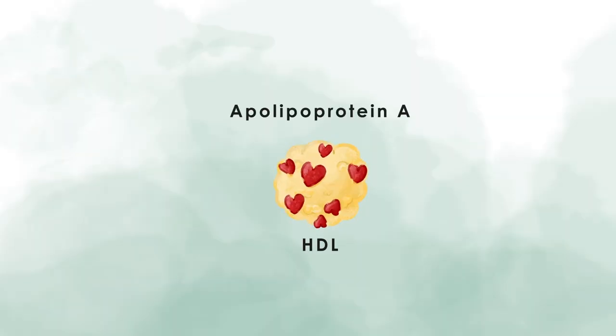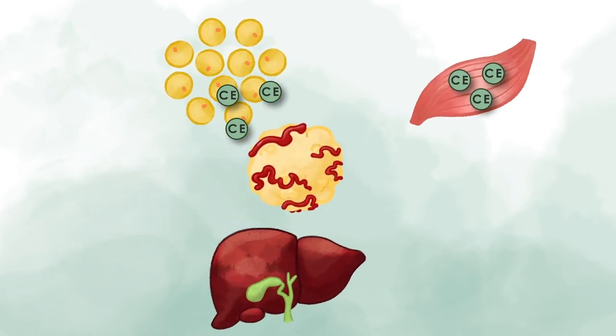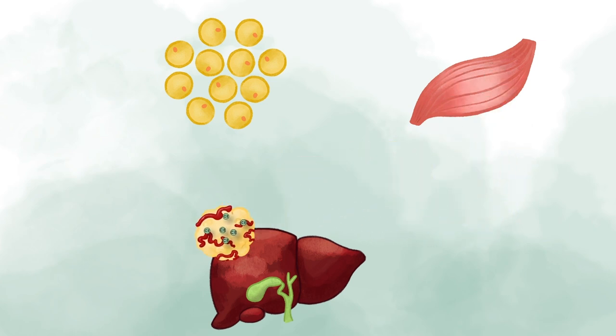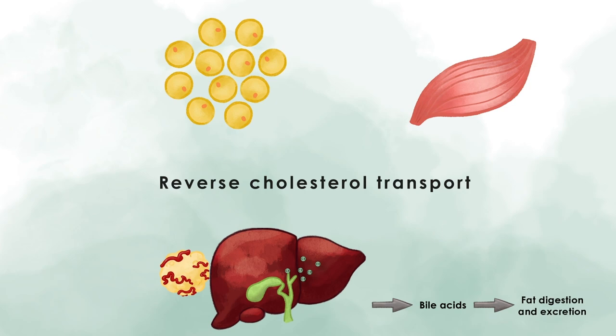The counterpart of LDL, and the supposedly good guy here, is the high-density lipoprotein, or HDL. HDL contains apolipoprotein A, which is also the marker for it in a blood test. HDL actively takes up cholesterol from tissues and brings it back to the liver — a process called reverse cholesterol transport. This way, cholesterol can be excreted from the body in the form of bile acids, which are important molecules for the emulsification of fat during digestion.